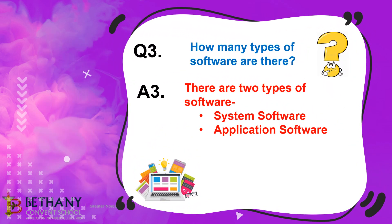How many types of software are there? There are two types of software: system software and application software.